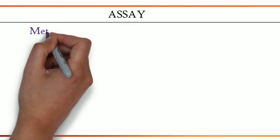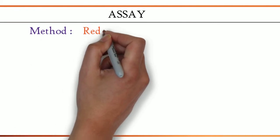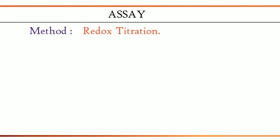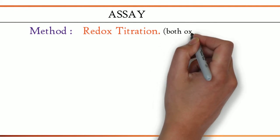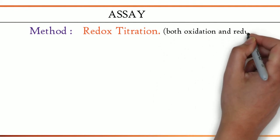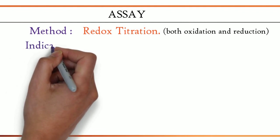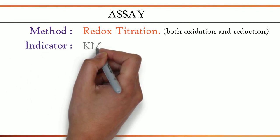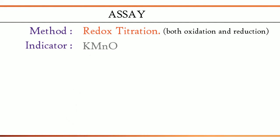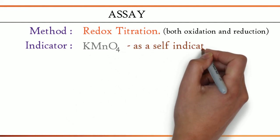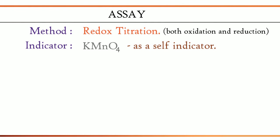Now, the important part, assay method. The method used is redox titration, which means there is both oxidation and reduction reactions takes place in this titration. The indicator: potassium permanganate is used in this reaction, acts as a self-indicator. It can participate in a chemical reaction and can indicate the endpoint of a titration.